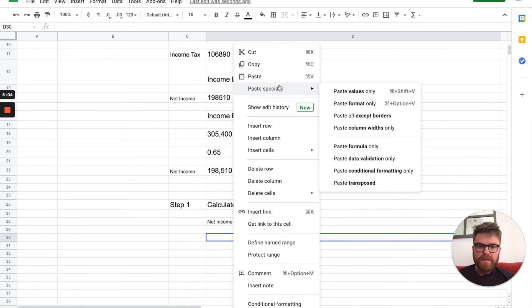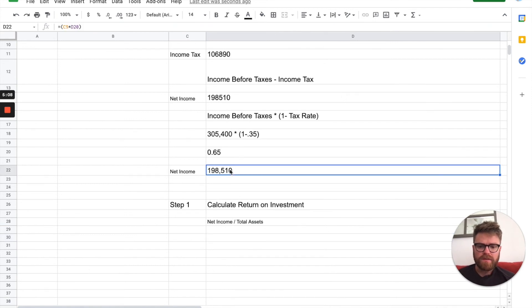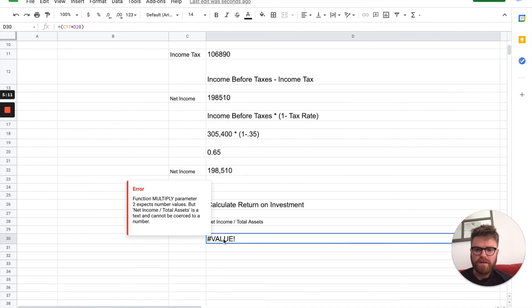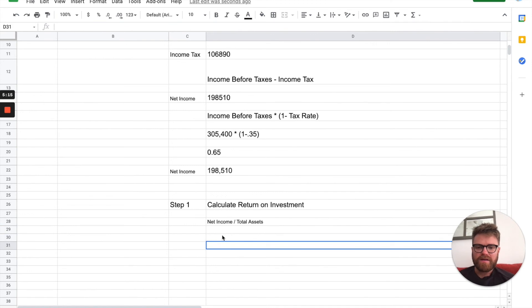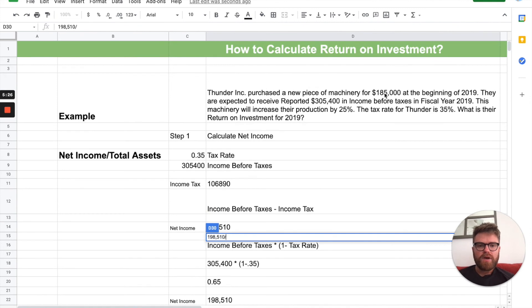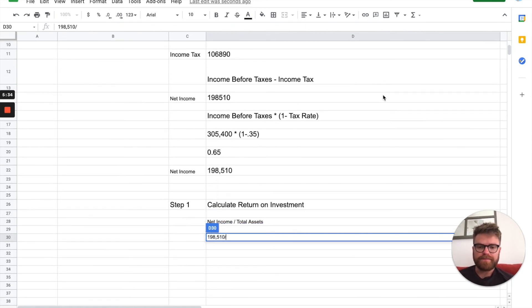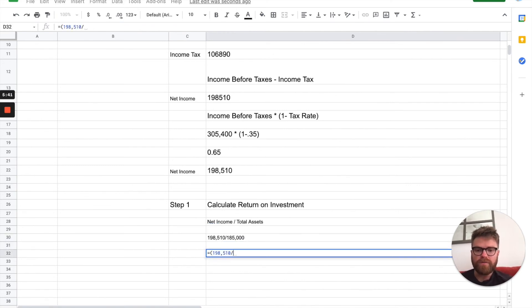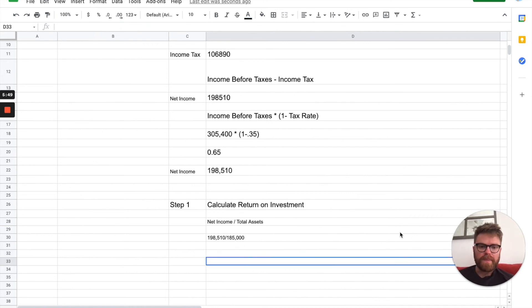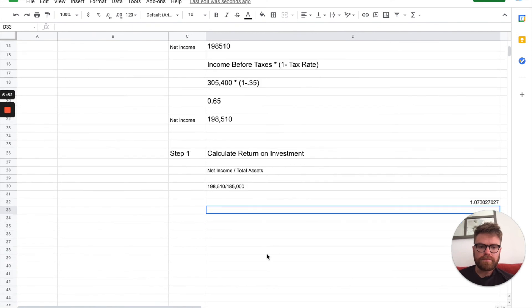Divided by total assets. The machinery is your asset here. That's it. $198,510 divided by $185,000. And, I'll do a formula. So, $198,510 divided by $185,000. And, I'll move it over so you can see it.